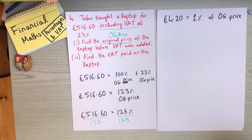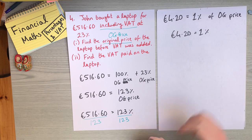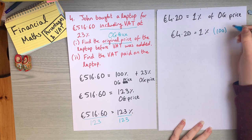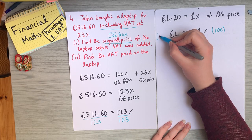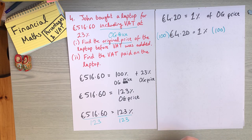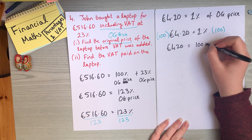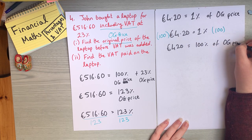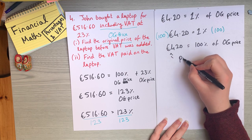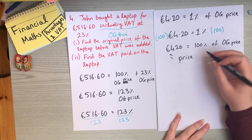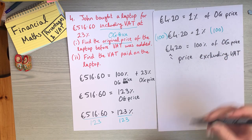Now to find 100% of the original price, I multiply both sides by 100, because that gives me 100% on one side. So €4.20 times 100 equals €420, and that is 100% of the original price — meaning €420 was the price of the laptop before VAT, i.e., the price excluding VAT. That's the answer to part one.